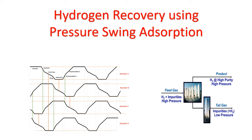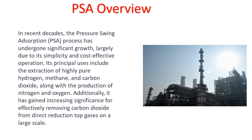There is a lot of demand around blue hydrogen at this moment. In this lecture, we will be discussing how gray hydrogen is generated and recovered in the process plant through pressure swing adsorption. The use of pressure swing adsorption has undergone tremendous growth during the last decades, mainly due to its simplicity and cost-effective operation.